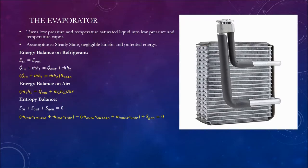The evaporator turns low pressure and temperature saturated liquid into low pressure and temperature vapor. We assume the process is in steady state with negligible kinetic and potential energy. The energy balance on the refrigerant means energy in equals energy out: the rate of heat in plus the rate of internal energy in equals the rate of internal energy out.